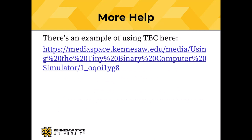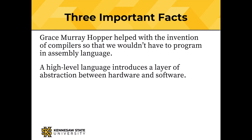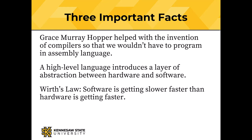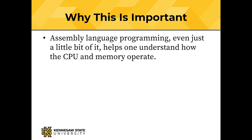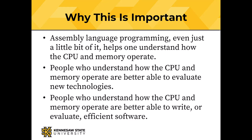There's more help here — a short video, just a couple of minutes, showing the complete mechanism for getting a program into TBC and running it. Three important facts in closing: Grace Murray Hopper helped with the invention of compilers so that we wouldn't have to program in assembly language. A high-level language like Python introduces a layer of abstraction between hardware and software, so you can work with a language more comfortable to human beings. But we also have to remember Wirth's law: software is getting slower faster than hardware is getting faster. Moore's law is not keeping up with advances in software. This is important because even a little assembly language programming helps you understand how the CPU and memory operate, making you better able to evaluate new software.